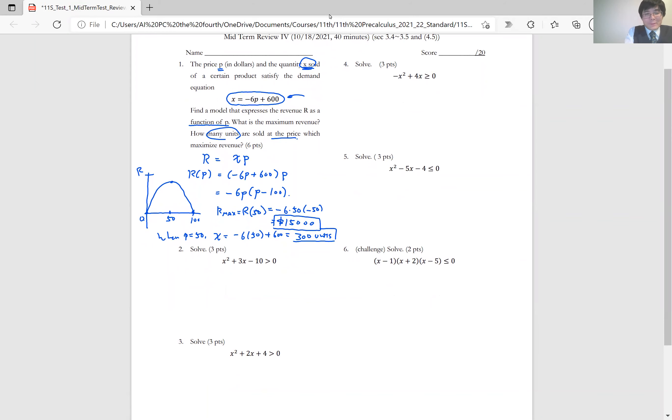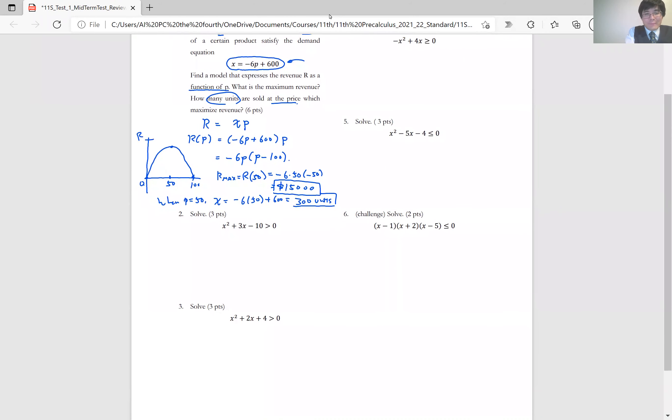Number two. So number three through five is all quadratic inequalities. So inequality, we are going to use a graph to see the solution set. For number two, you can factor this one: x plus 5 and x minus 2.